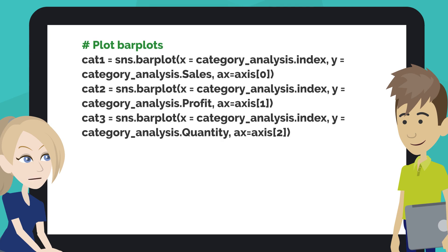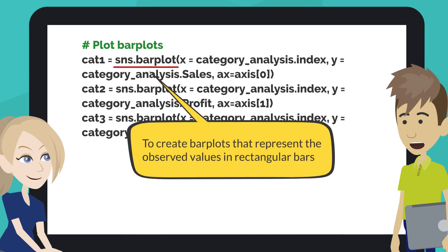This code creates the bar plots in rectangular bars. The Seaborn.barplot function creates bar plots that represent the observed values in regular bars. To use this plot, we choose a categorical column for the x-axis and a numerical column for the y-axis, and it creates a plot taking a mean per categorical column.